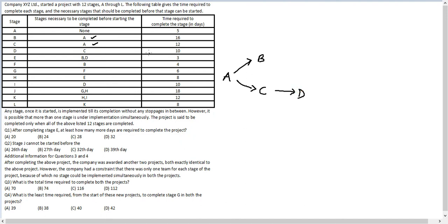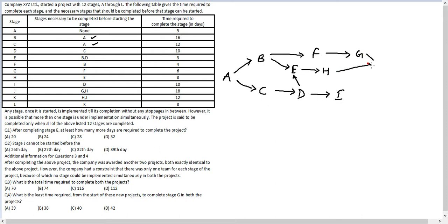After B, E can be done. The arrows are important — do not vary in the direction of movement. F can happen after B, then G after F. H happens after A. I happens after D. J happens after G and H, combining to give J. K happens after H and I. Finally, L happens after K.